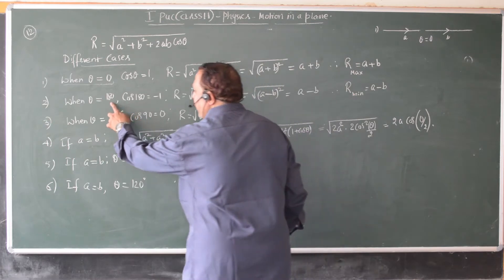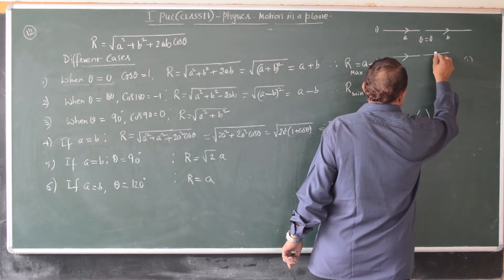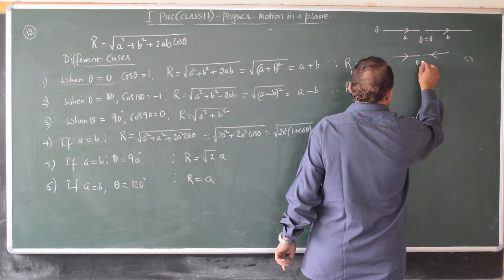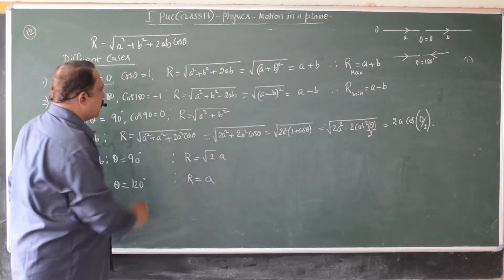In the same way, if theta is 180 degree, if the two vectors are in the same straight line but in opposite direction, this is the case of theta being 180 degree. Cos 180, as you know, it is minus one.